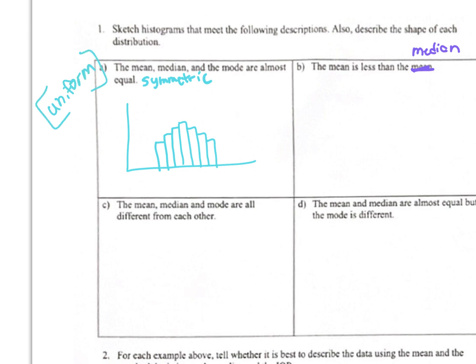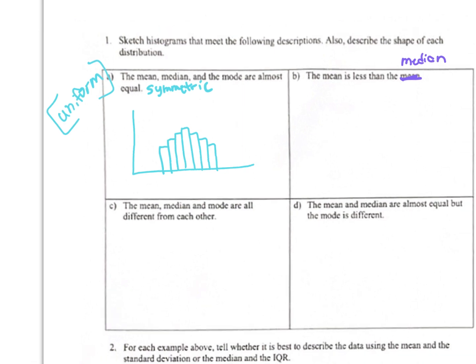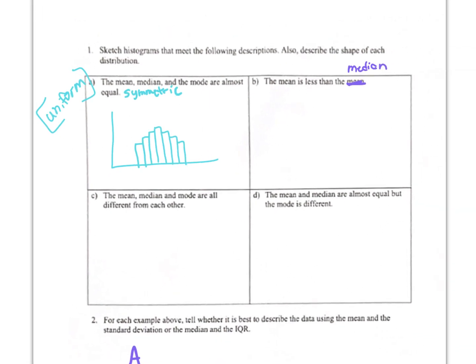If the mean is less than the median, then which way is the skew? Skewed left. So it should trail off to the left — the graph would look something like that, with the tail going to the left.